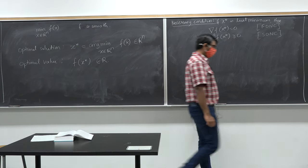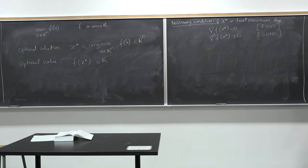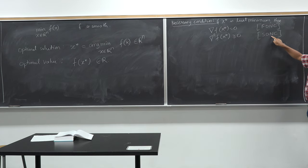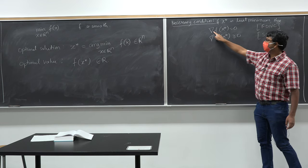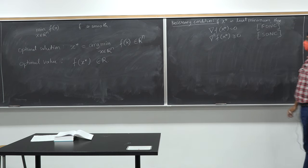If I am at a local minimum, the first derivative of the function must vanish and the second derivative of the function must be positive semi-definite. This is known as the first order necessary condition for optimality, and the second is the second order necessary condition — first order because you take the first derivative, second order because you take the second derivative.